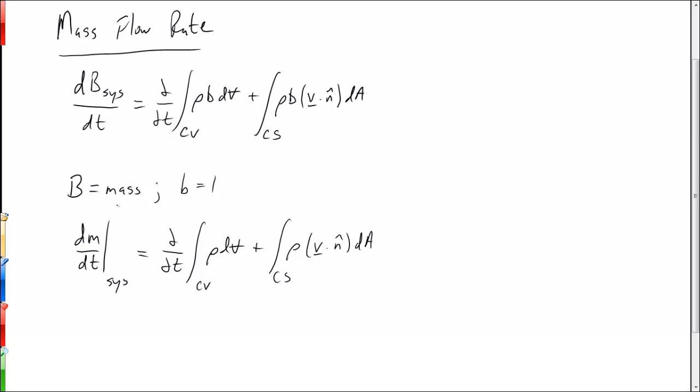Now for a control system, by definition we're following a certain set of particles, and therefore the total mass in the control system is constant. The change in mass over the total system over time is going to be equal to zero, and we call that the conservation of mass.